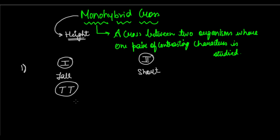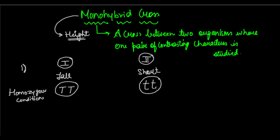Height can have two allelic forms: capital T for tallness and small t for shortness. The tall plant had capital T and capital T together — this is what we call a homozygous condition. It is called homozygous because both alleles are of the same type; 'homo' means same. The short plant had an allelic pair of small t and small t.